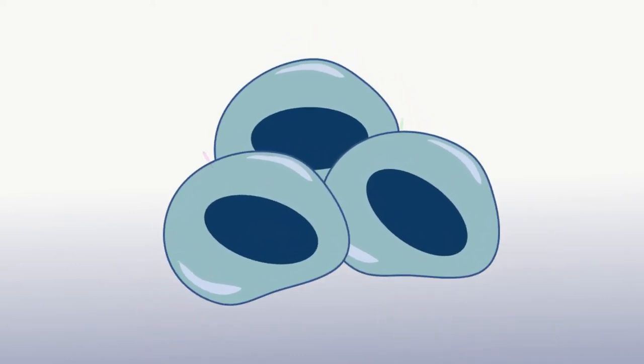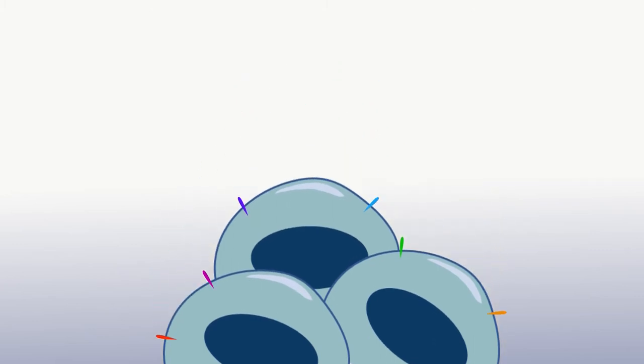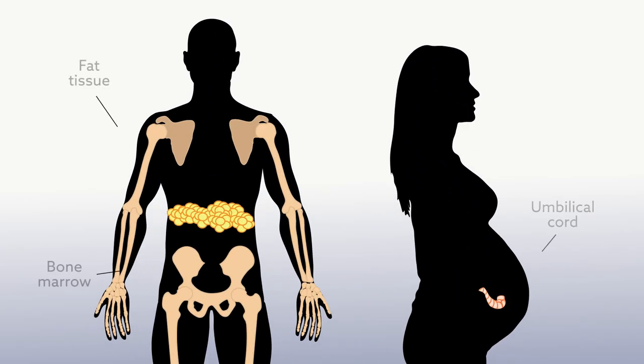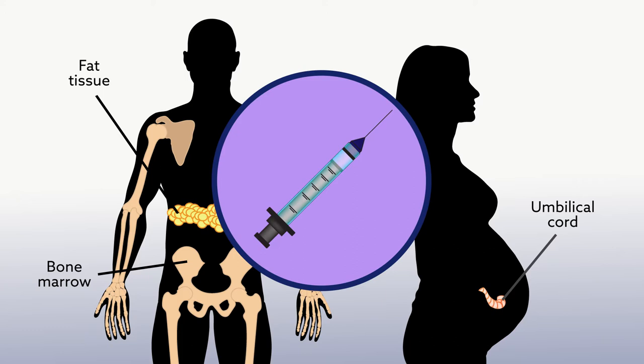Complicating things is the fact that no one marker can identify mesenchymal stem cells, and they're a heterogeneous population anyway. We don't yet know which sources may be better at fighting sepsis, or what the best doses are and when to give them.